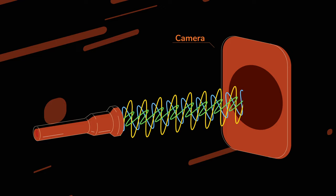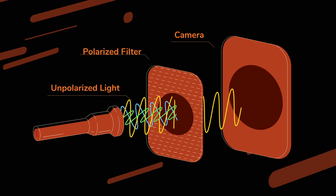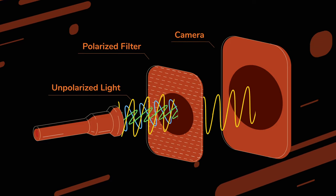Light produced by a torch is unpolarized. When we place a polarized filter in between, the light becomes polarized.